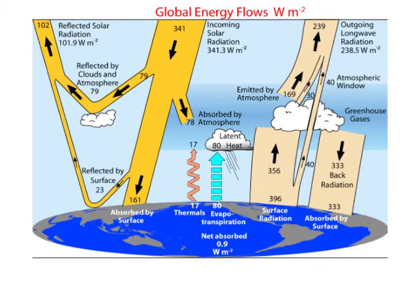This rather complicated looking diagram represents the energy flows to and from the Earth's surface systems. I'll just walk you through the bits and pieces in it. That big yellow thing represents the inflow of solar energy, amounting to a bit more than 341 watts per square meter at the top of the atmosphere. That's the best current measurement, and what happens to that radiation is something like this.